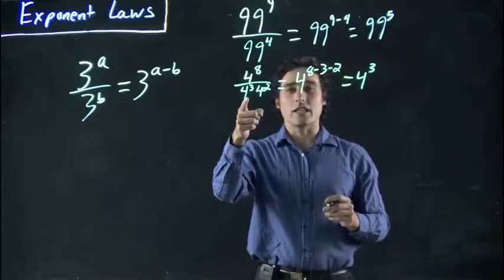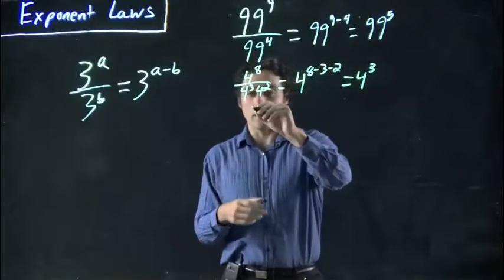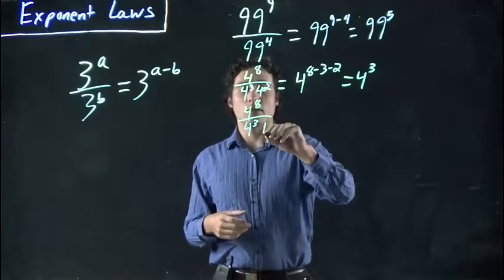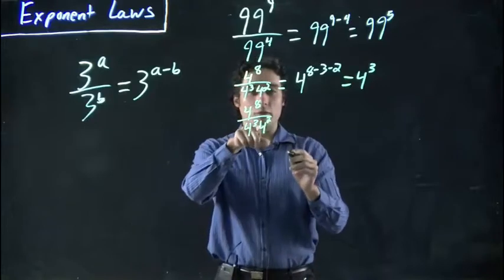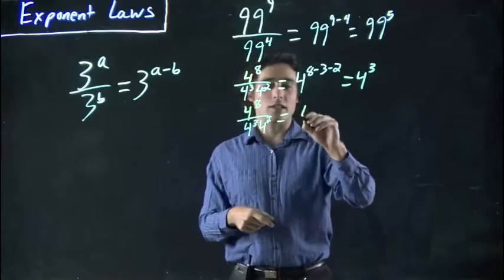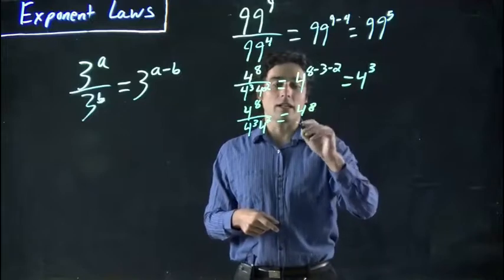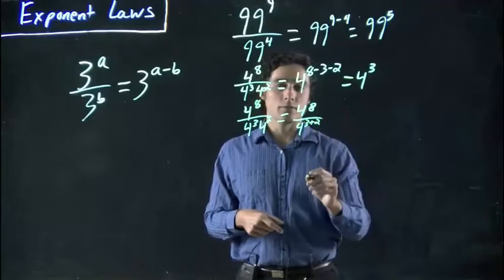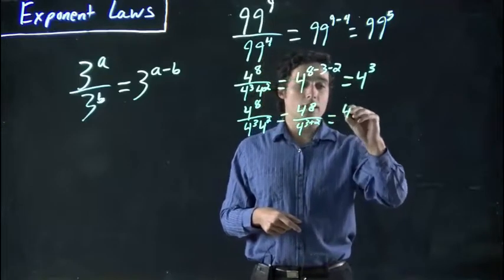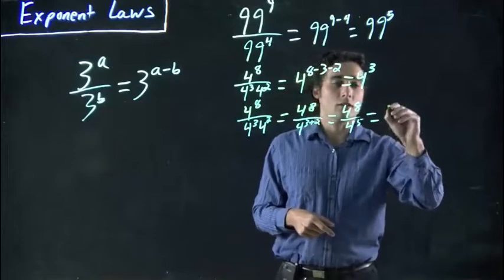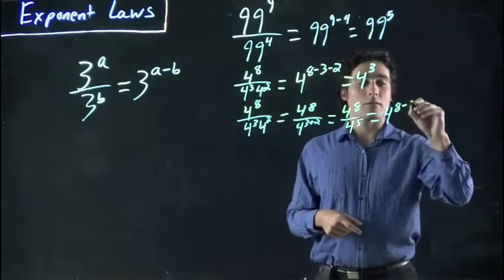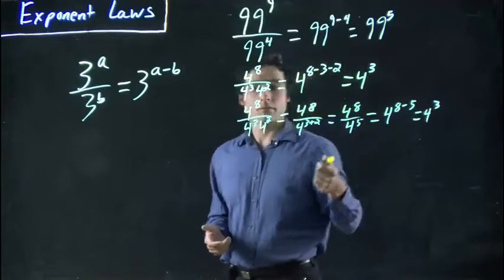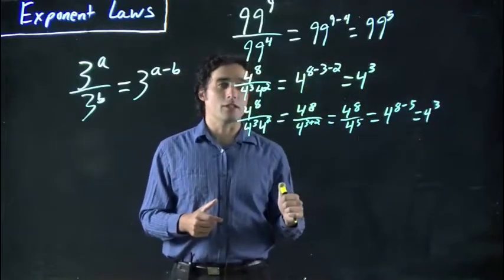But we could also look at this and have said, wait a minute, we just looked at the multiplication rule. So I'm going to rewrite this one for a second. So we have 4 to the 8 over 4 to the 3 and 4 to the 2. Well, if we wanted to, we could multiply these together. So we could write this as 4 to the 8 and 4 to the 3 plus 2, or 4 to the 8 over 4 to the 5. Oh, and once again, 4 to the 8 minus 5 is equal to 4 to the 3. Two different ways of doing the same thing.